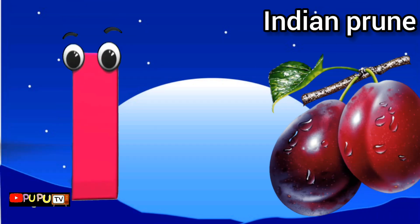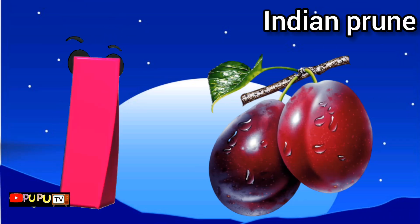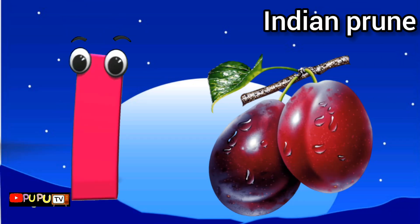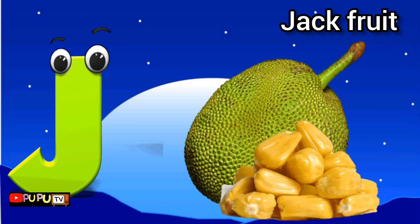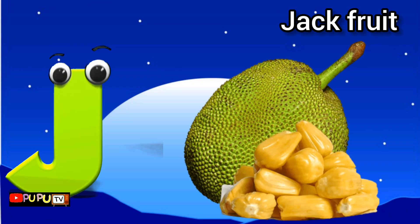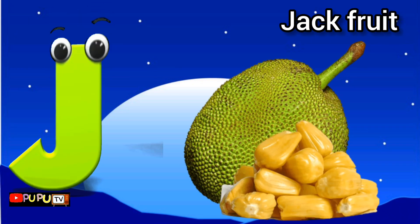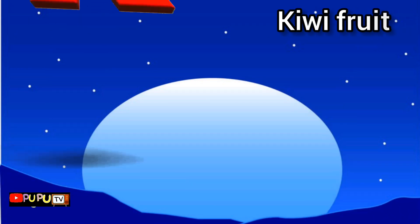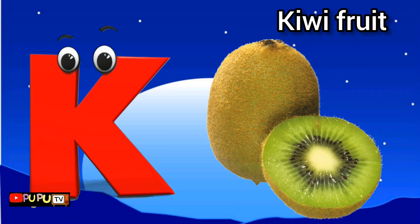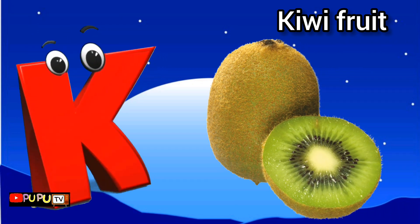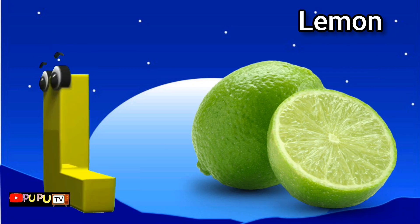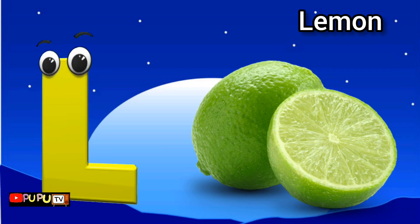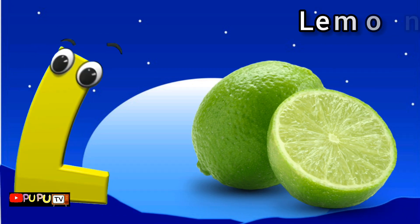I is for Indian prune, e-e-e, Indian prune. J is for jackfruit, j-j-jackfruit. K is for kiwifruit, k-k-k, kiwifruit. L is for lemon, l-l-lemon.